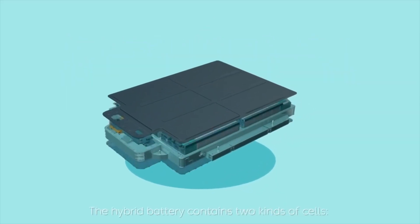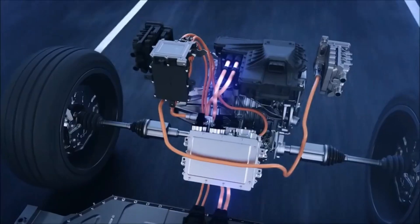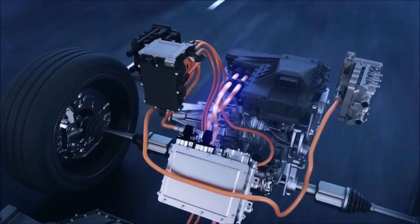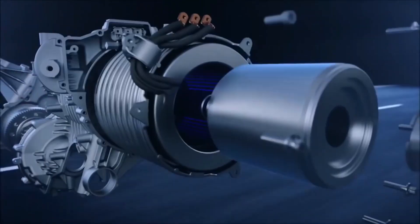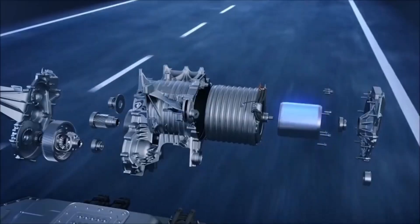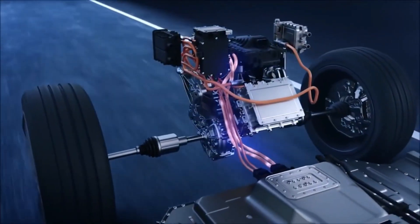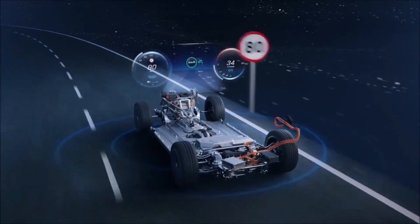Since different components of the vehicle have different requirements, the DC-DC converter distributes the output power coming from the battery to a required level. It also provides the voltage required to charge the auxiliary battery.